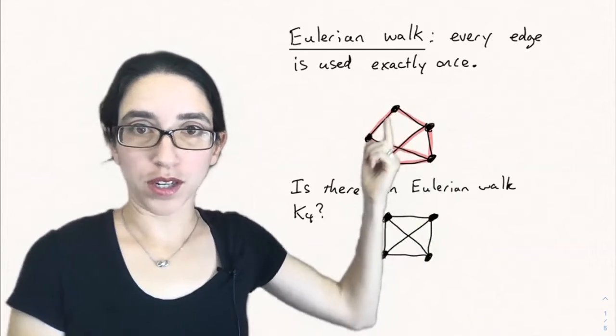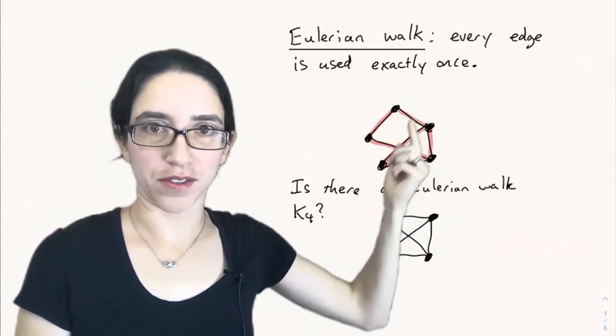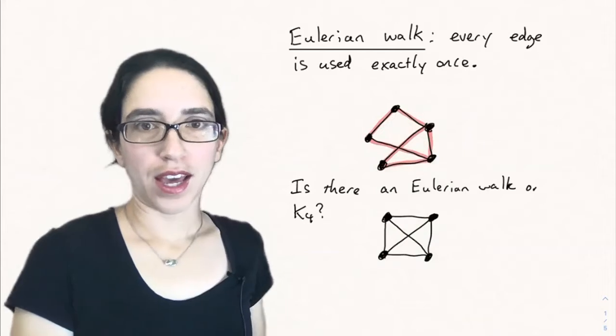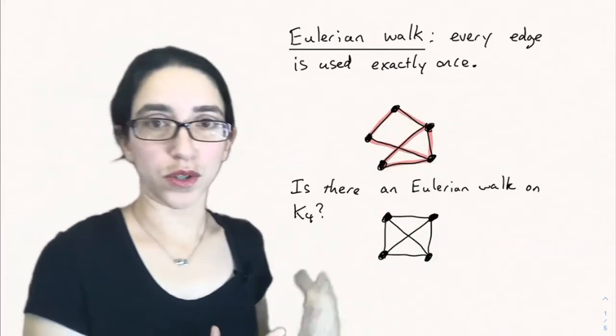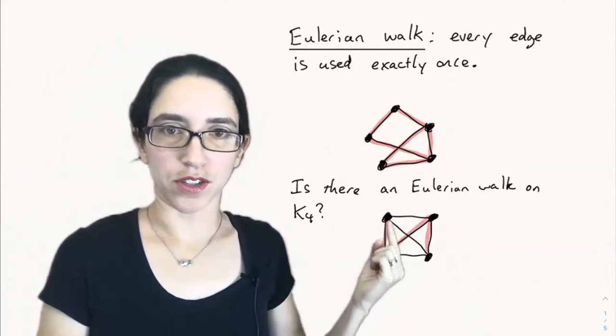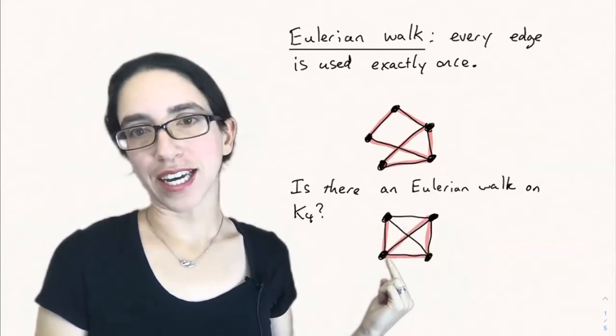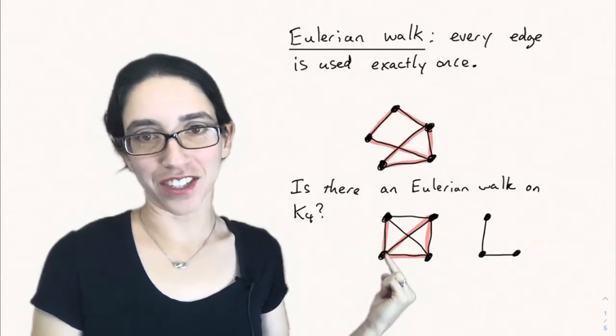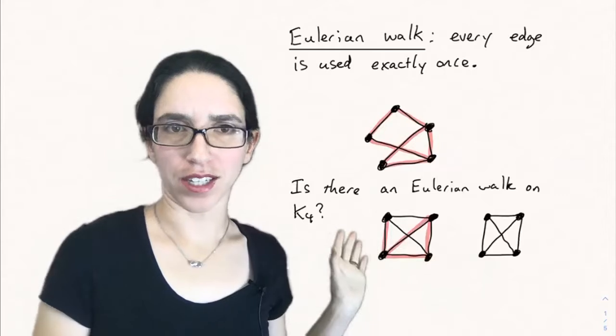Here's an example of an Eulerian walk. We went around this path and then around the triangle. Is there an Eulerian walk on every graph? Turns out no. So let's try to make an Eulerian walk on k4. Let's try to get every edge exactly once here. Oh no, when I got to this vertex, I got stuck. I can't escape. I already used those three edges. And I'm not allowed to repeat an edge. So let's try again.